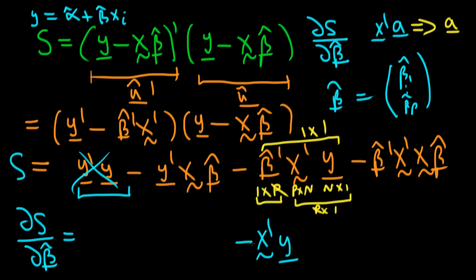Now for the second term: it is simply the third term transposed. If you transpose the third term, beta hat moves to the front transposed, then X transposed, then Y transposed transposed which is just Y. So the second term is the transpose of the third term. But we've established both are scalars, and the transpose of a scalar is itself. Therefore the second term contributes exactly the same as the third term: minus X prime times Y.